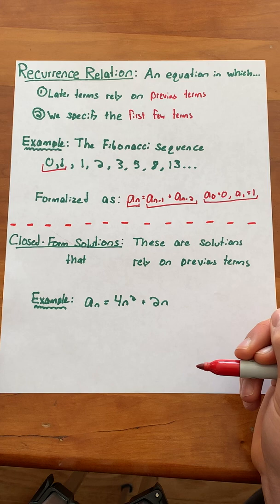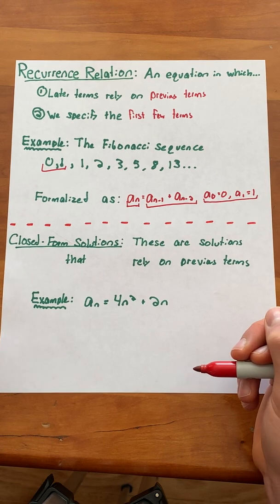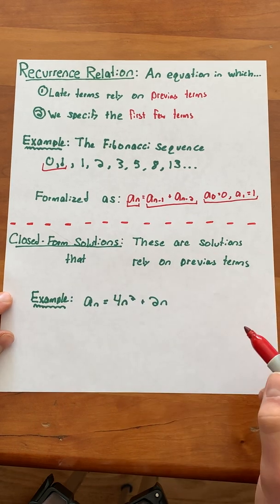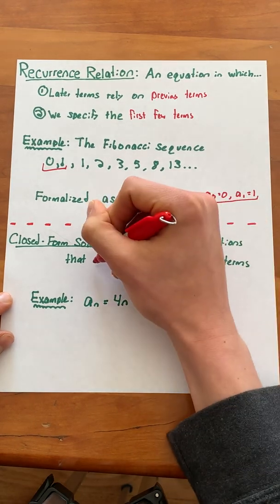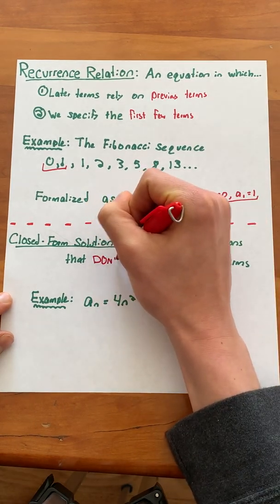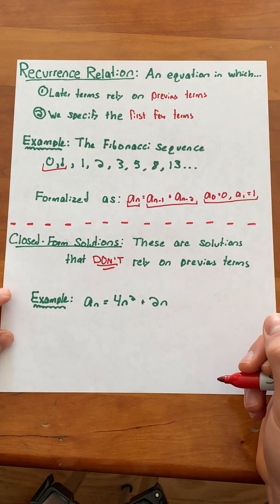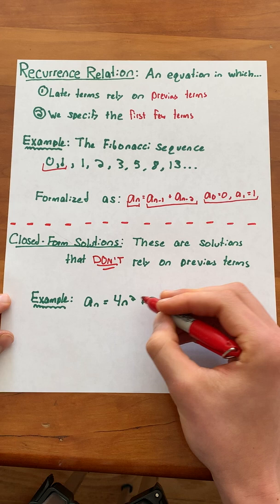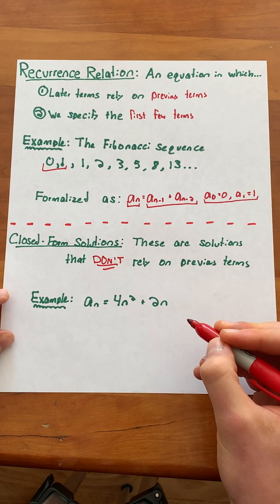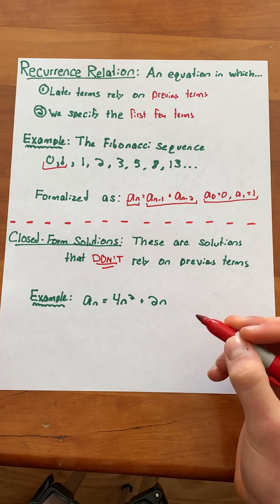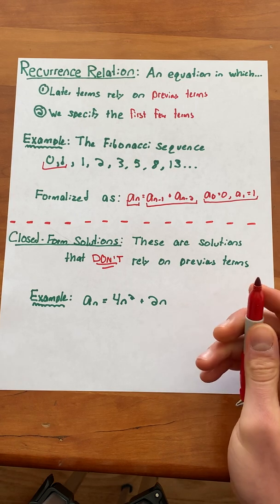Unfortunately relying on previous terms can get to be a bit of a pain, which is why we attempt to form closed-form solutions. These are solutions that don't rely on previous terms. An example is a of n equals 4n squared plus 2n. We don't have any n minus 1's or n minus 2's. Everything relies on a of n, the thing that we're currently solving for.